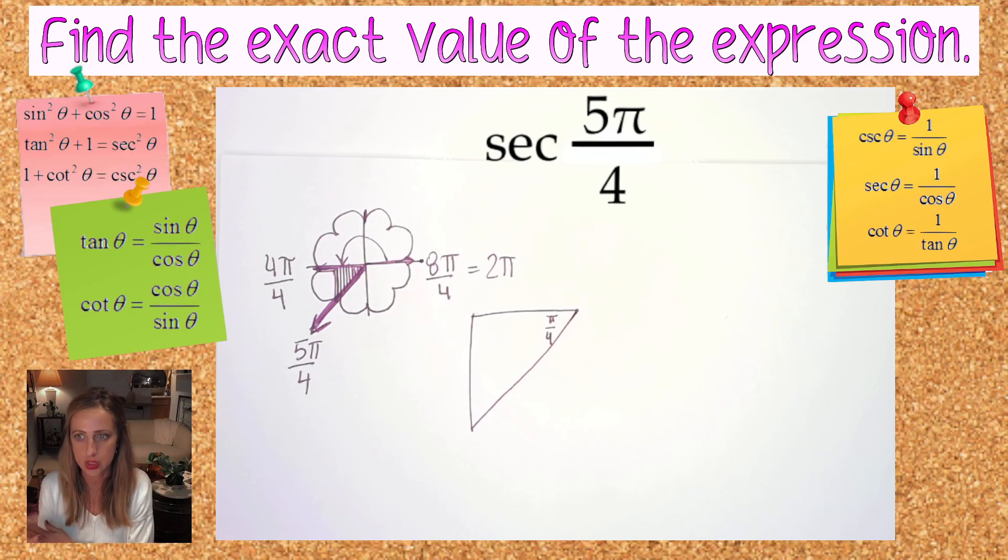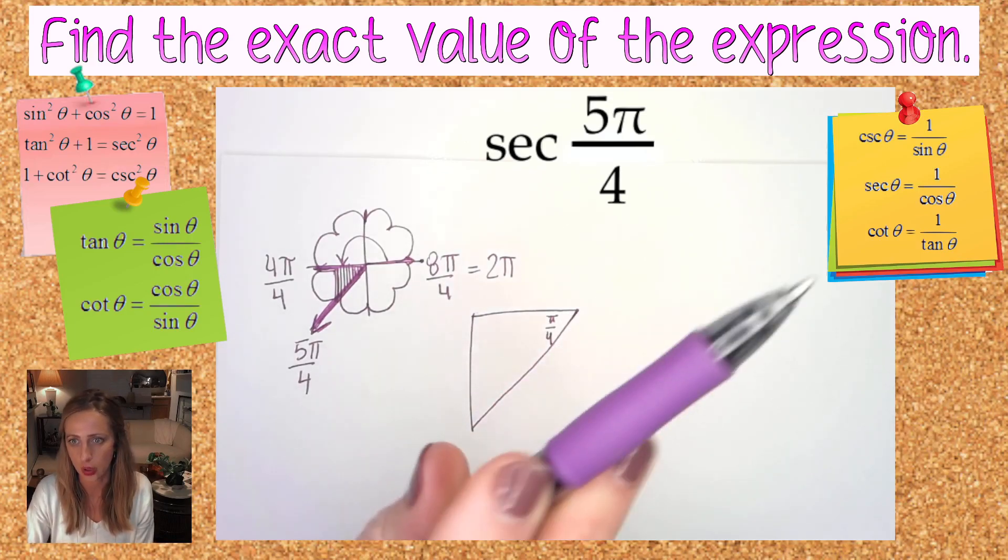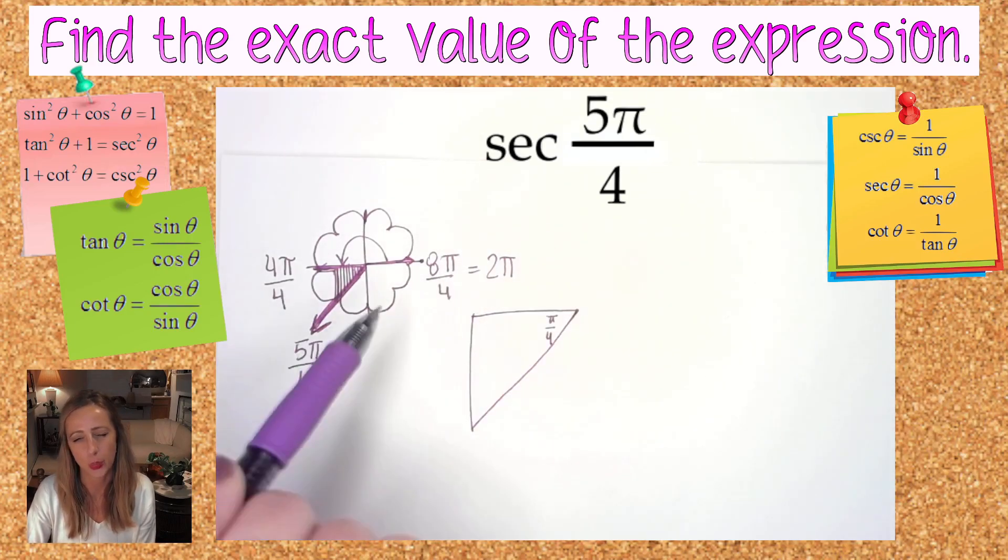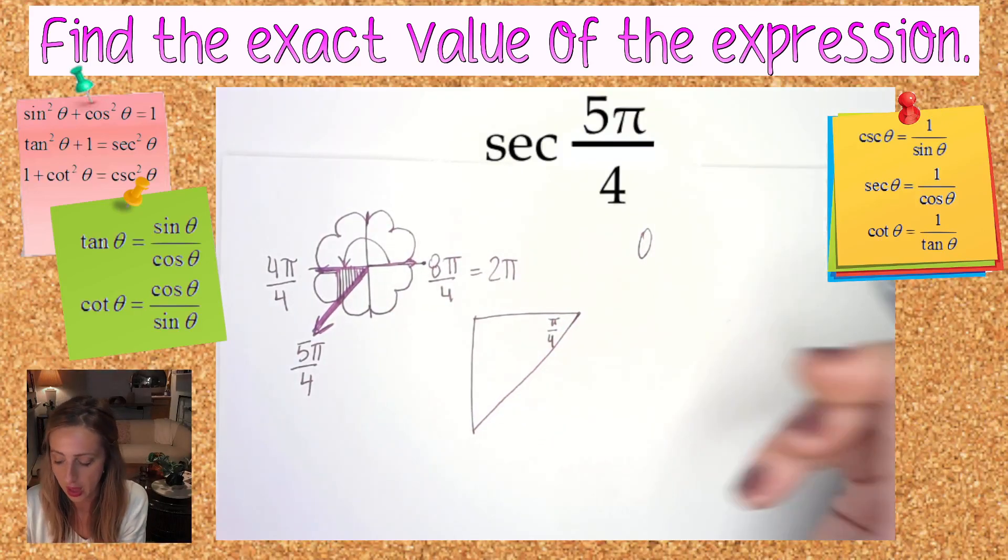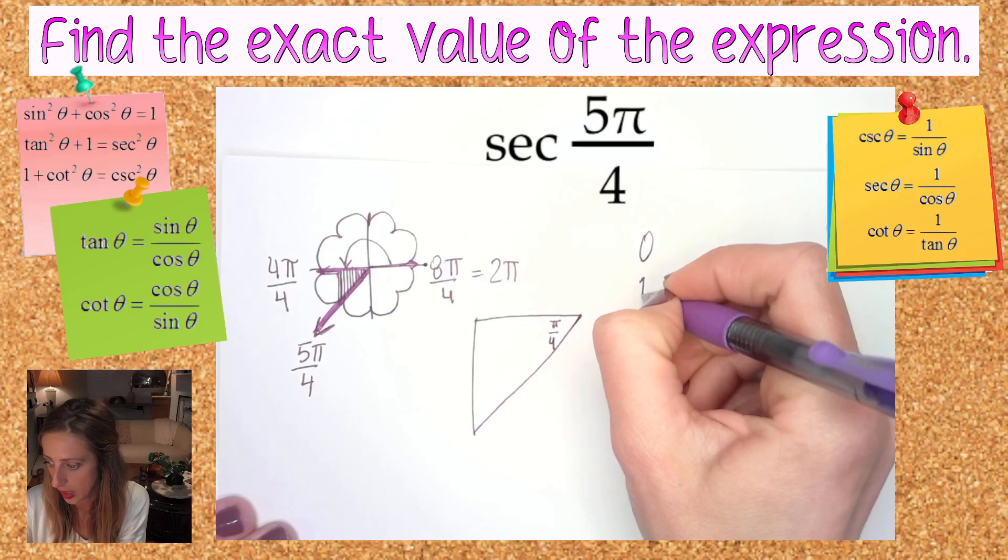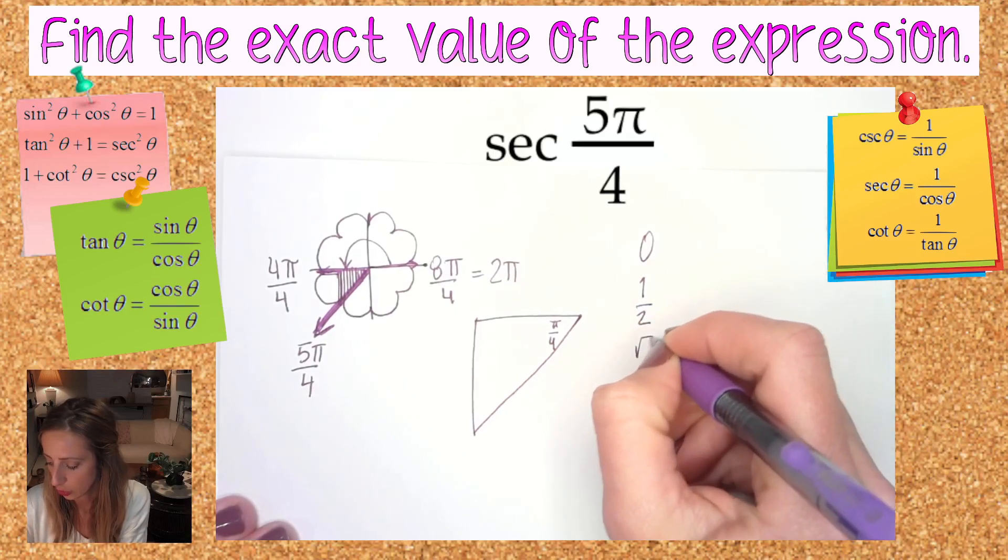Next, quickest way to do it, I'm going to think to myself: secant is the reciprocal of cosine, as you see right over there. It's 1 over cosine, reciprocal of cosine.